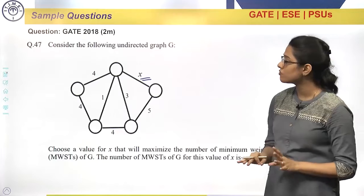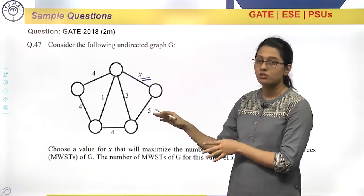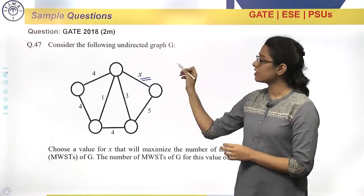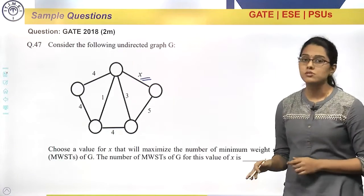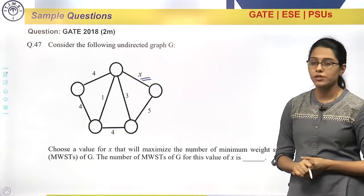The question is not for finding the value of x. The question is that if we find the correct value of x, how many minimum cost spanning trees are possible for a particular graph?